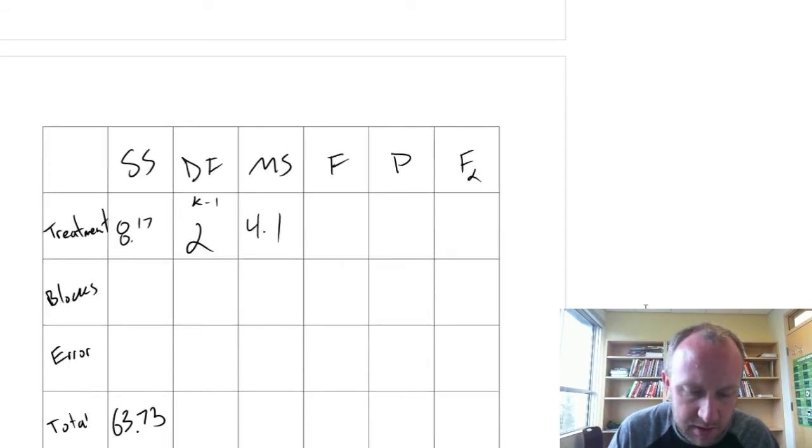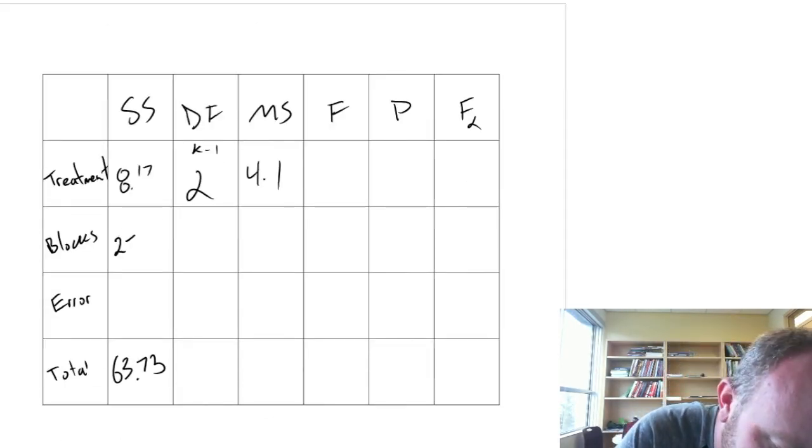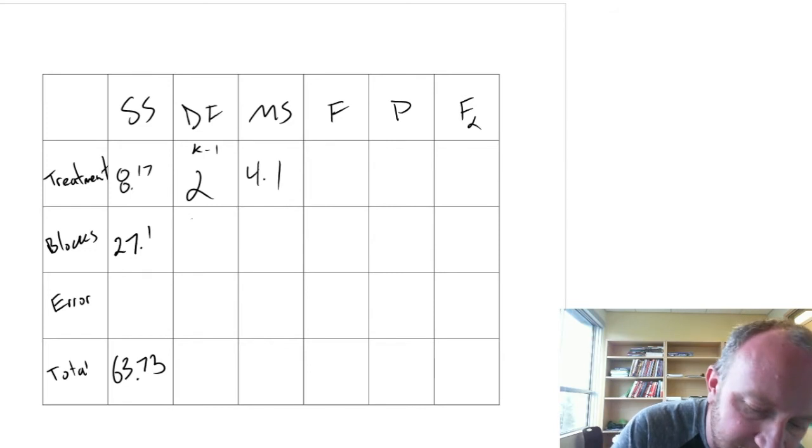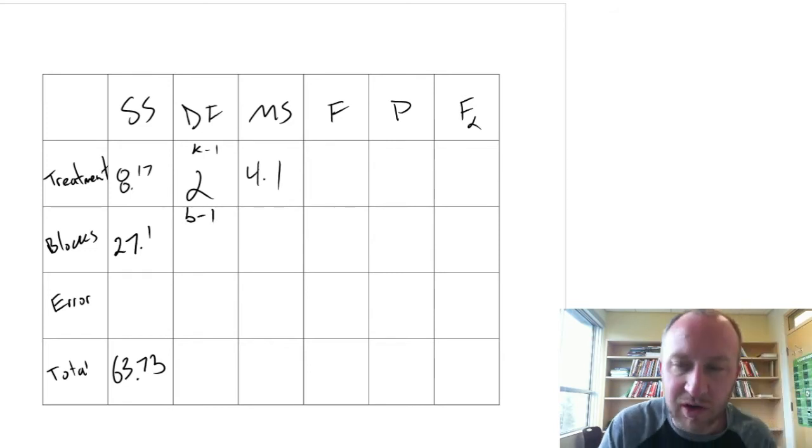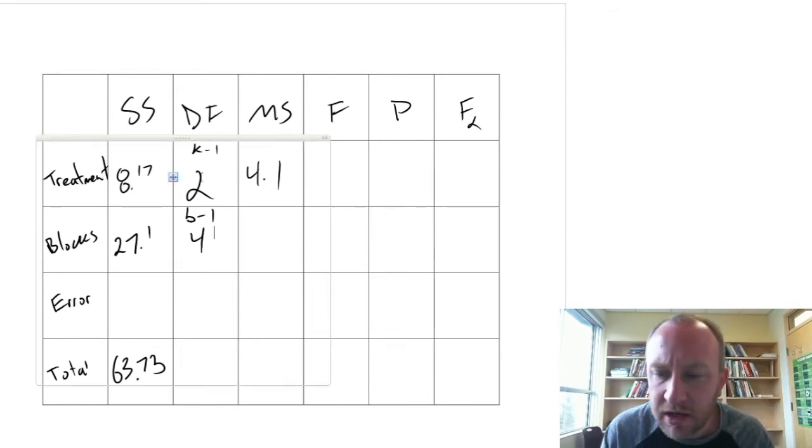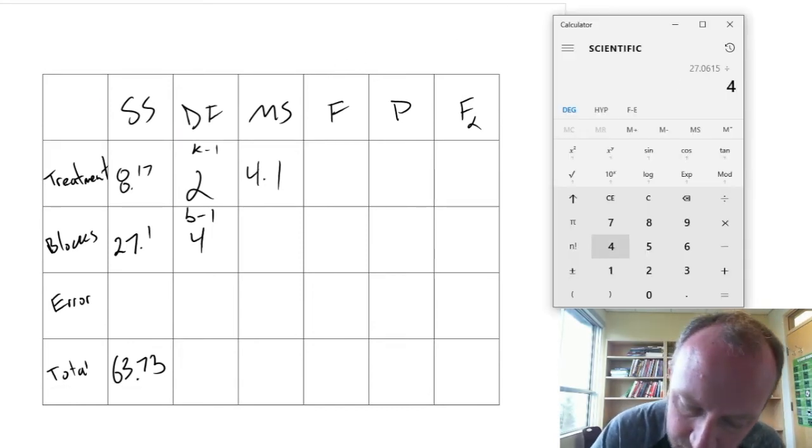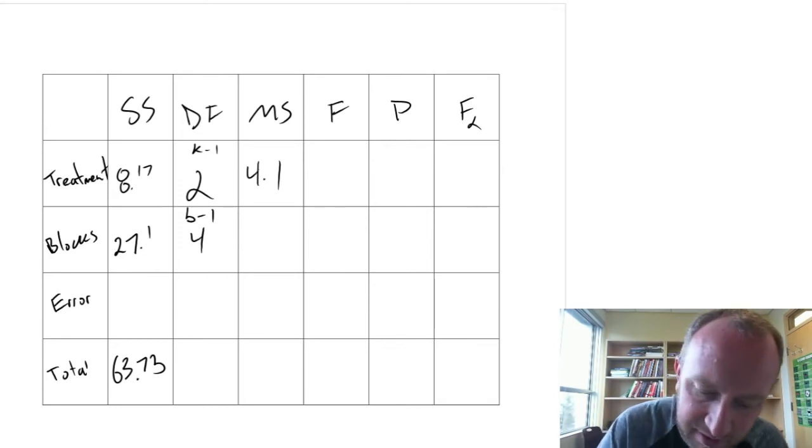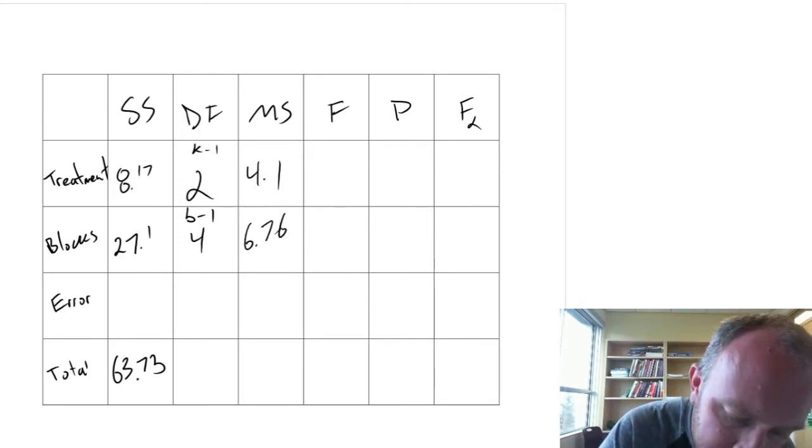Come back down here. 27.1 degrees of freedom. B minus 1. We had 5 blocks. So we have 4 degrees of freedom. 27.1 divided by 4 equals 6.76. Okay. And now we can move on to error.